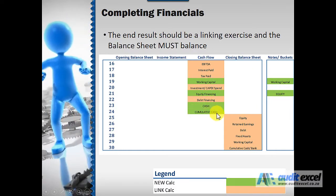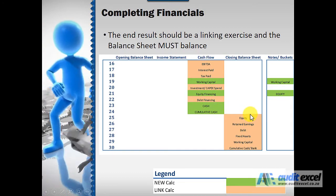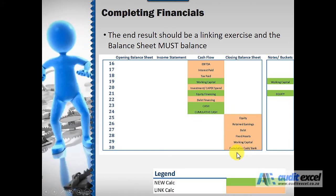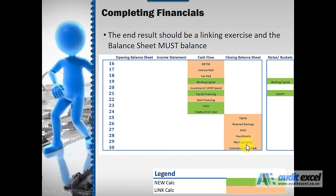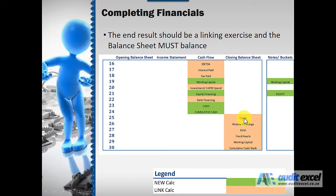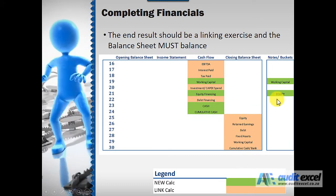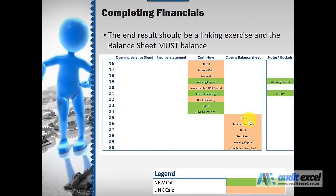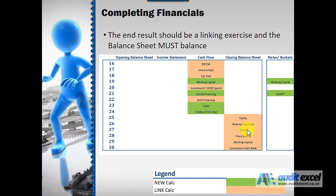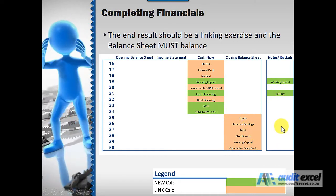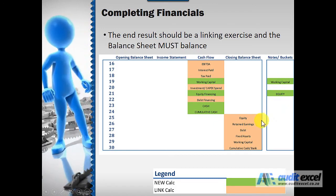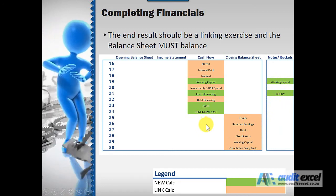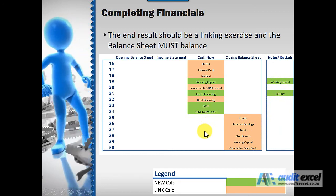It results in the cash and the cumulative cash. Most importantly, the closing balance sheet — you'll notice it's all beige because you shouldn't need to do any calculations here. Every one of these should be able to link: equity links to the equity bucket, retained earnings to the income statement, debt to the debt bucket, fixed assets to the fixed asset bucket, working capital to those buckets, and cumulative cash to the bank. If you do it this way, the balance sheet has to balance.